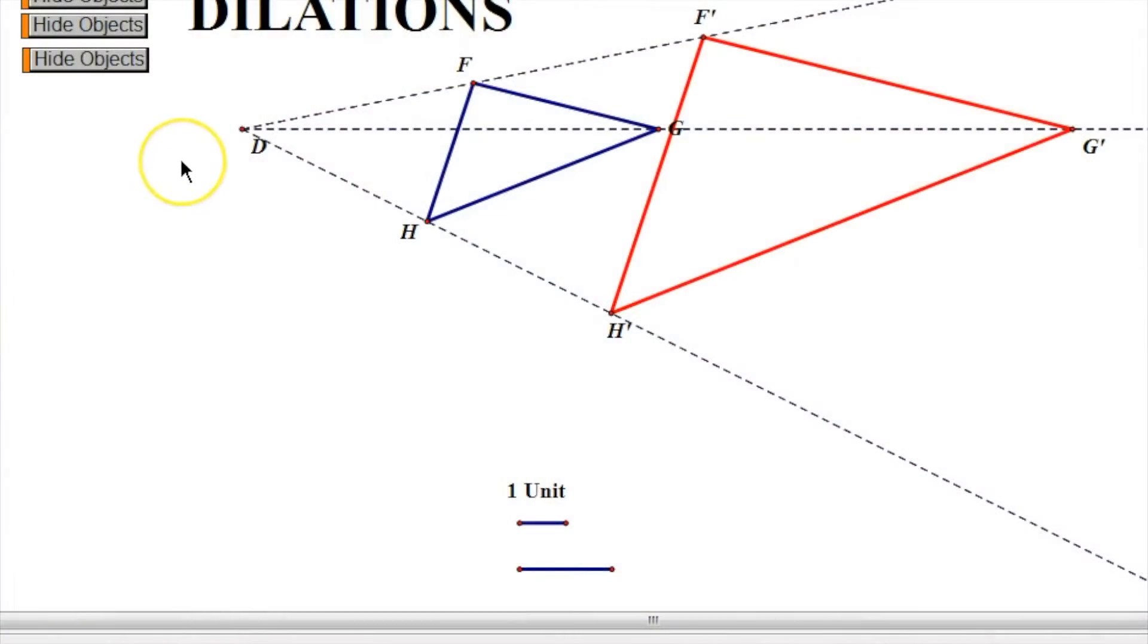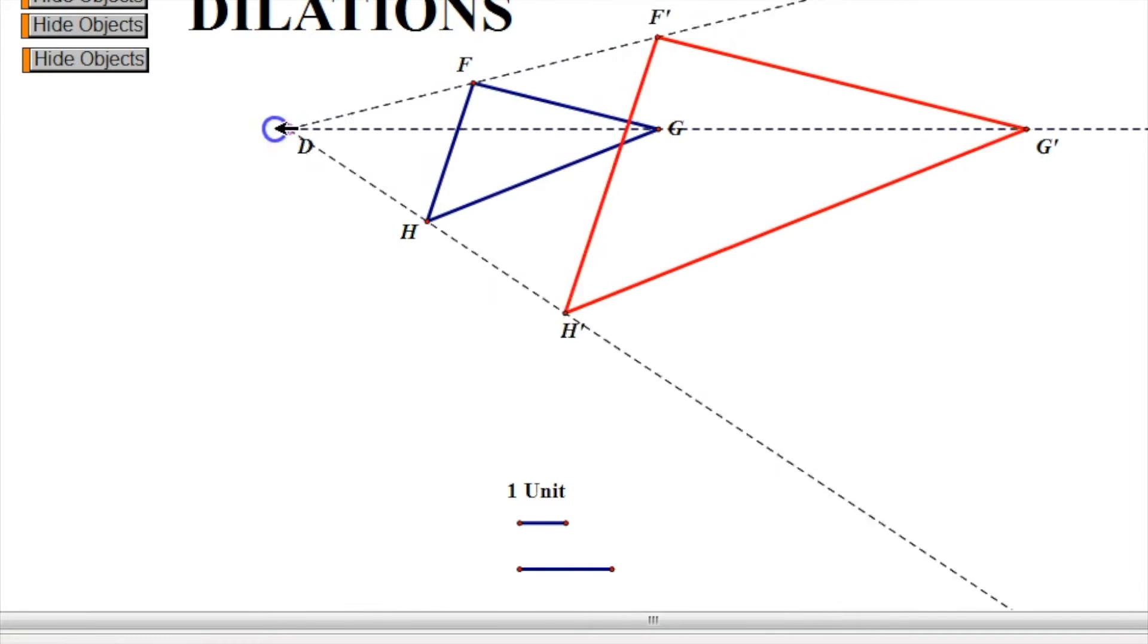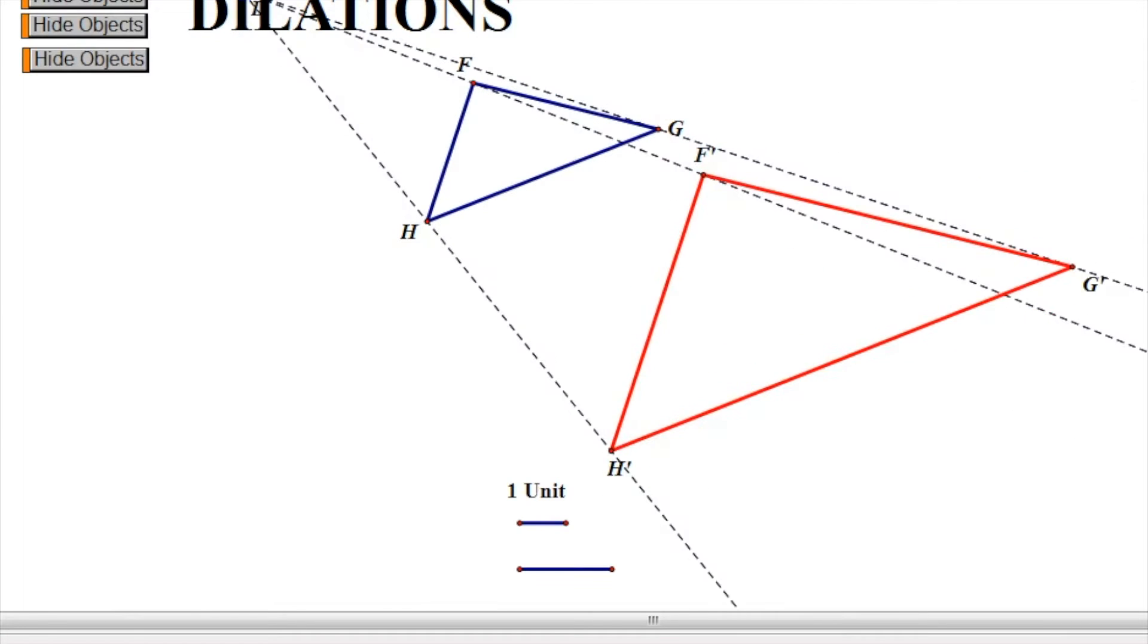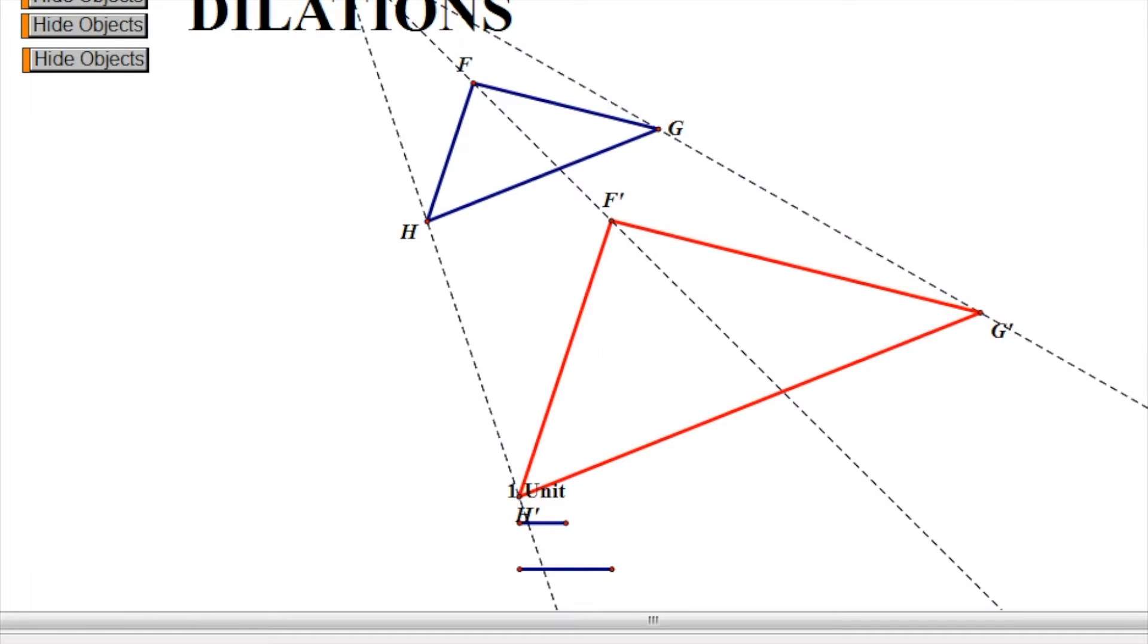A couple of quick demonstrations here on the computer. So here's our original FGH and here's its image in red. And here's where the center is outside. You can see it kind of, I call it casting the shadow almost.